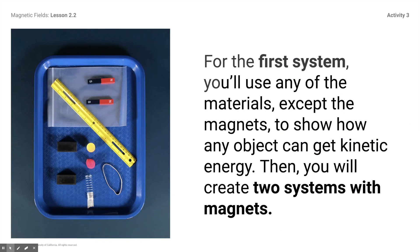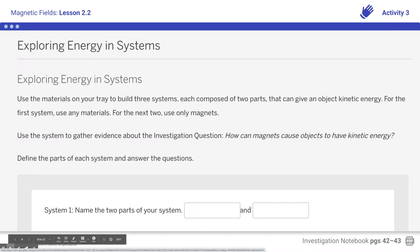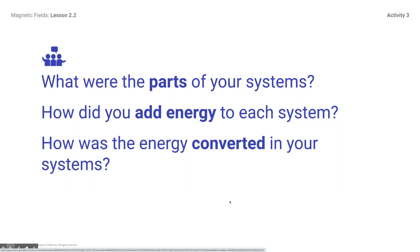You're going to make three systems. In the first system, you can use anything except the magnets — I want you to create a system to show how an object can get kinetic energy. You have to use at least two items. Come down and fill in which two parts of your system you used, describe them, how you added energy to the system, and how the energy was converted in the system.